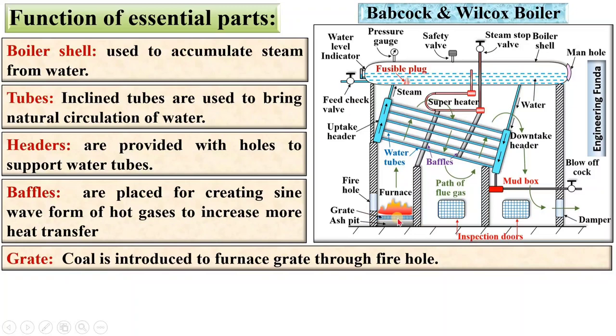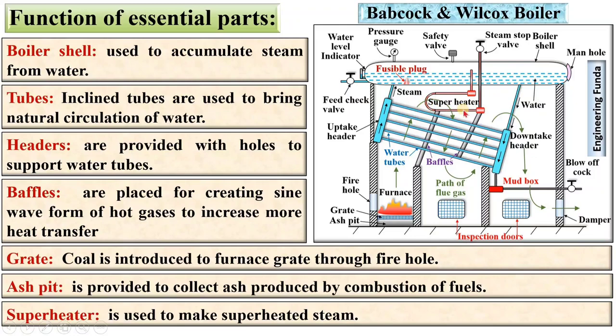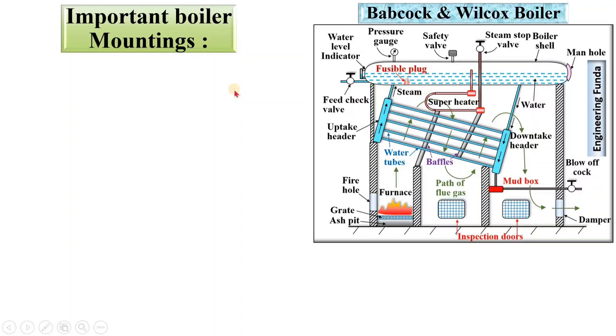Next, the grate — coal is introduced to the furnace grate through the fire hole. The ash pit is provided to collect ash produced by the combustion of fuel. Next, the superheater is used to make superheated steam.